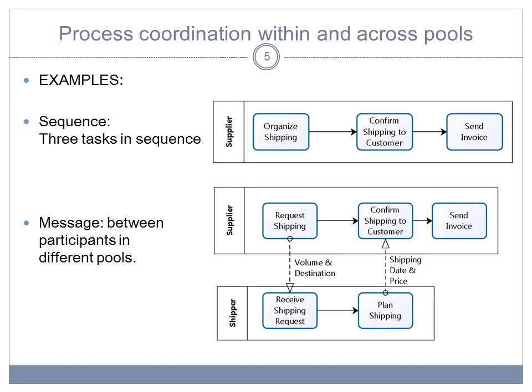If you add to that the messages, then you coordinate across the different participants, but this comes on top of the coordination within a participant. So you find again the supplier with the three tasks in sequence, and now the shipper has a sequence of two tasks, and the messages will coordinate between all these tasks, resulting in the end in a sequence of five tasks that will be executed.